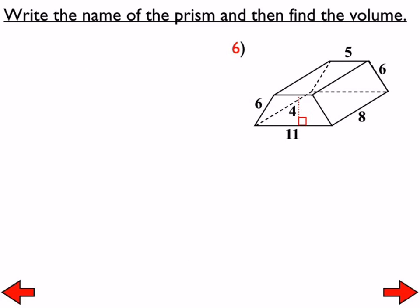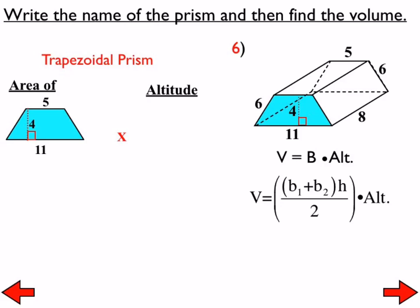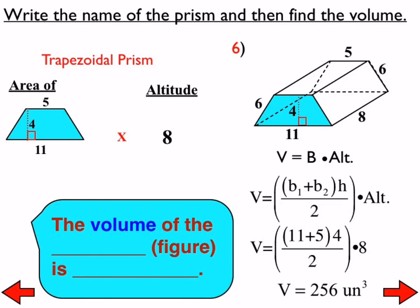Next shape—name it and find the volume. This is a trapezoidal prism. We need to find the area of the trapezoid: base 1 is 5 and base 2 is 11—we don't even need the 6, as I told you there would be extra information. Find the area of that trapezoid and multiply by the altitude of the prism, which is 8. That gives a volume of 256 cubic units. From here on out, even if units aren't in the picture, we still need to write the word 'units' or abbreviate it.